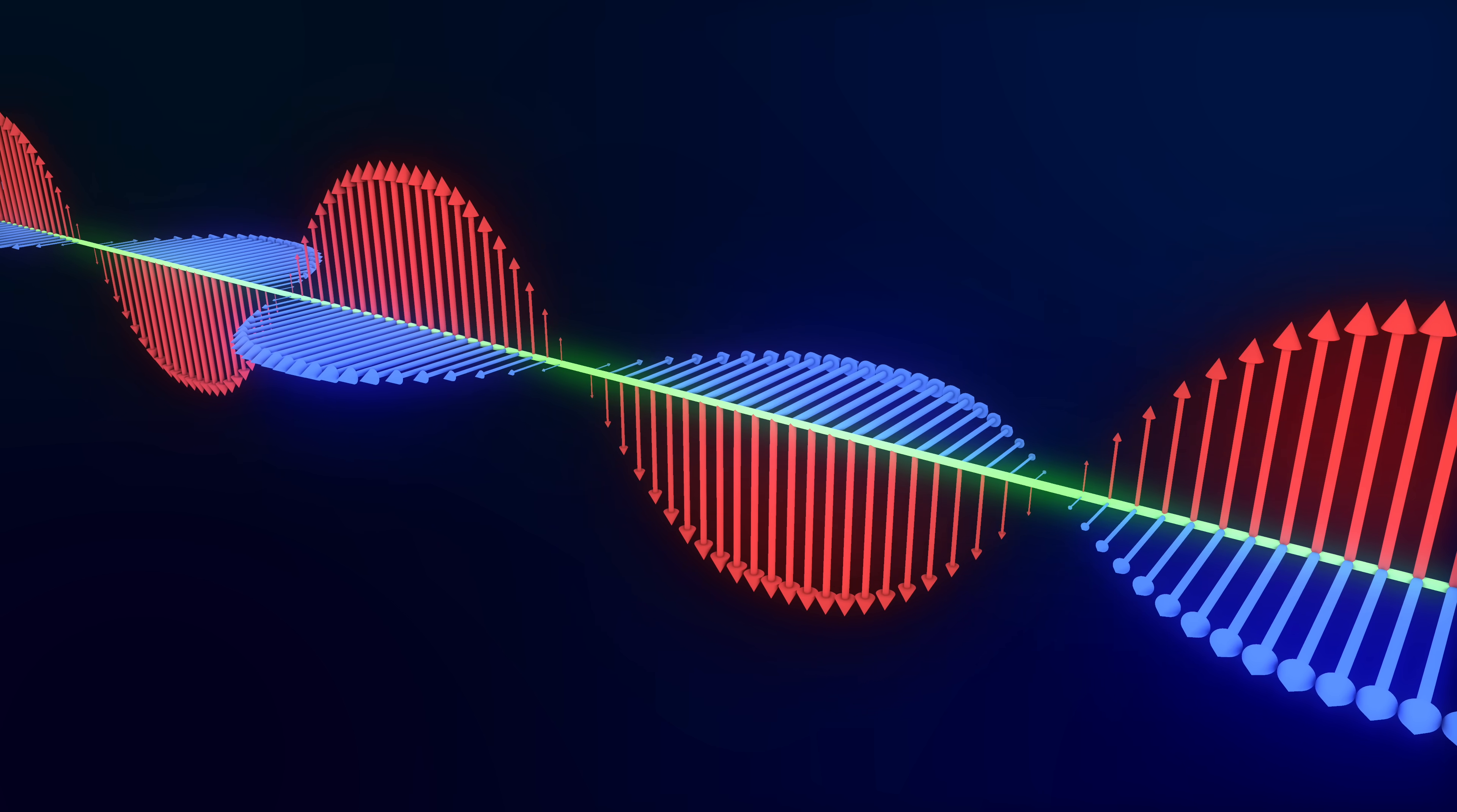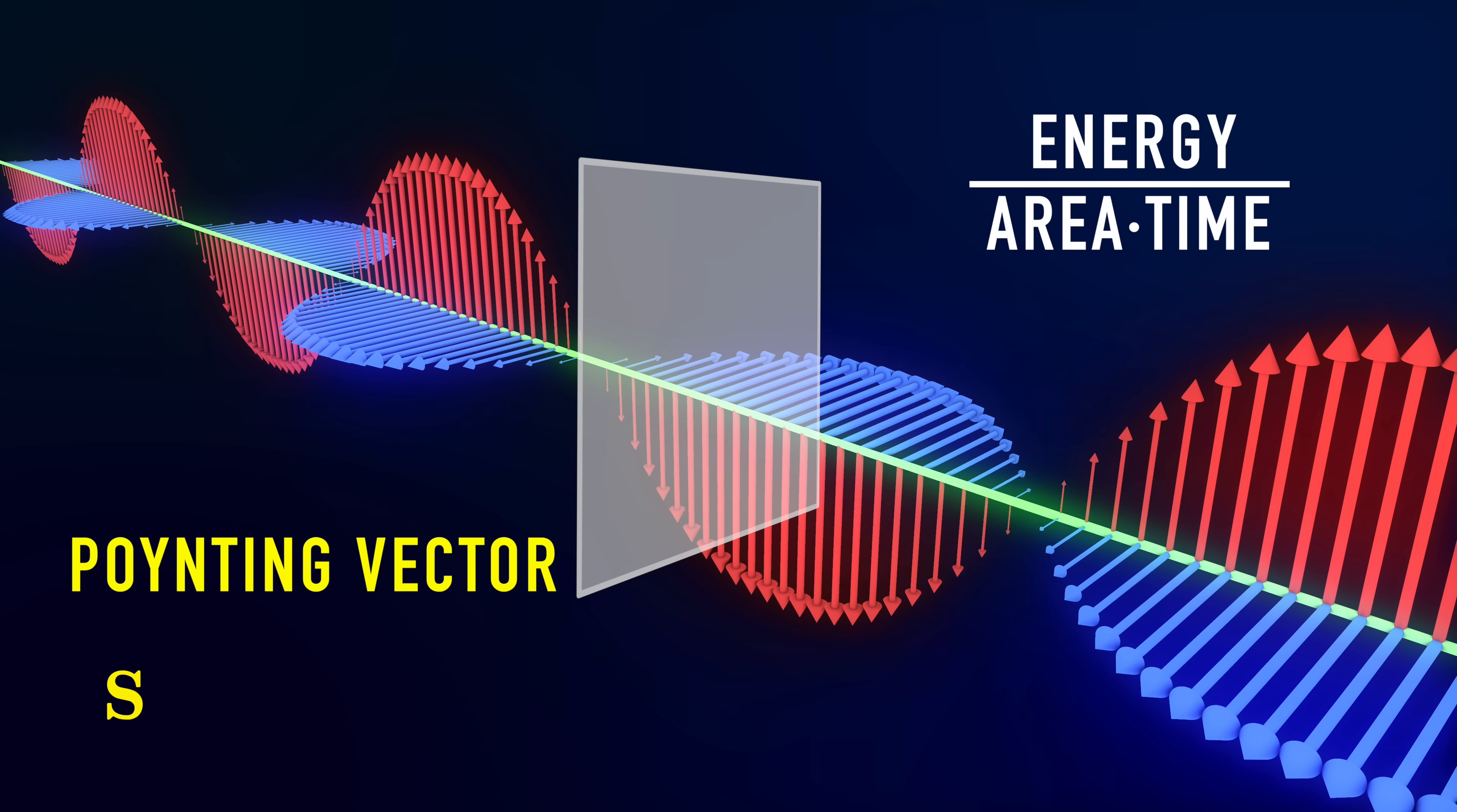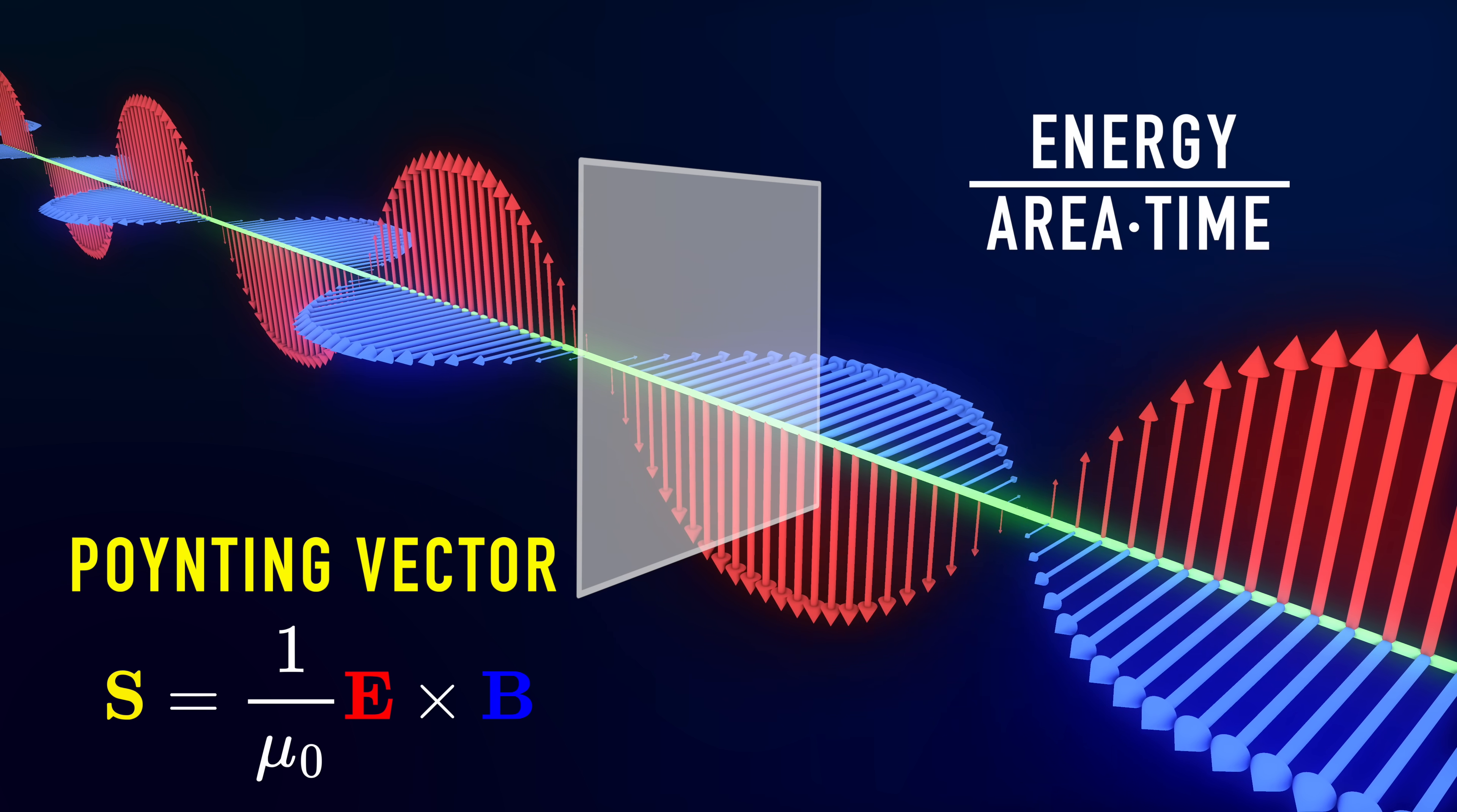Now Poynting works out an equation to describe energy flux - that is, how much electromagnetic energy is passing through an area per second. This is known as the Poynting vector and it's given the symbol S. And the formula is really pretty simple. It's just a constant, one over mu naught, which is the permeability of free space, times E cross B. Now E cross B is the cross product of the electric and magnetic fields.